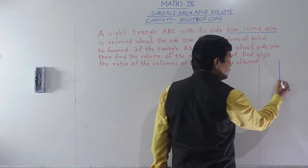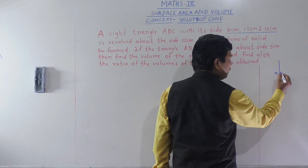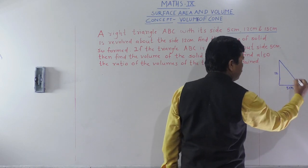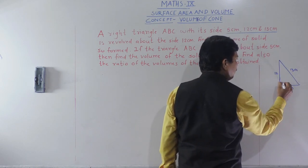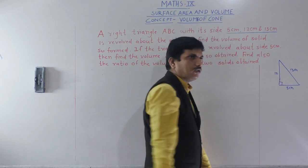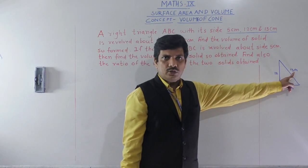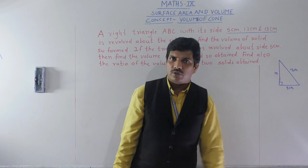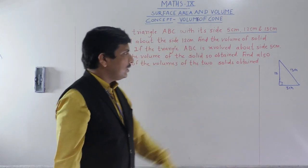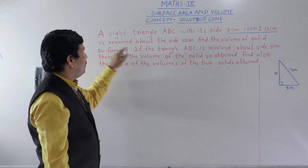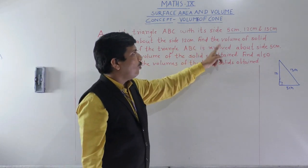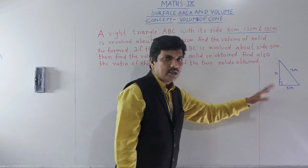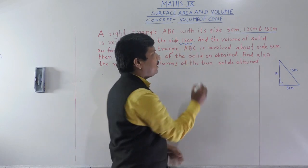We have 12 cm, 5 cm, and hypotenuse 13 cm. This is a Pythagorean triplet — 12² + 5² = 13². So this is a right-angle triangle. It is revolved about the side 12 cm. Find the volume of the solid so formed.